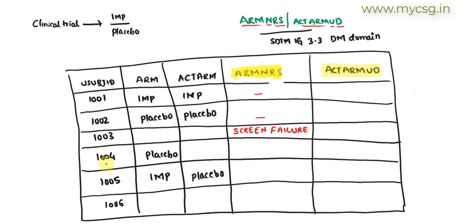For subject 1004, the planned ARM is placebo but actual ARM is null, so ARMNRS must be populated. This subject was assigned to placebo but never treated, so we would populate ARMNRS as 'Assigned but Not Treated'.